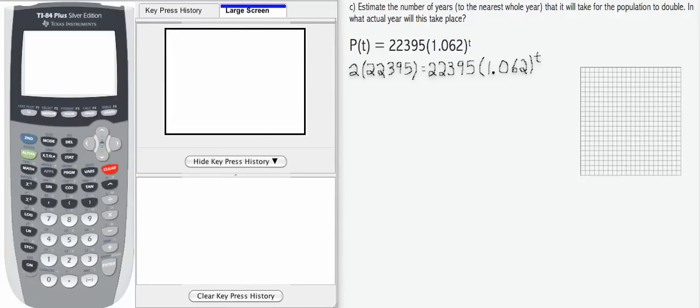In other words, we want to know when our function, on this right hand side here, equals 2 times the initial value. So we can set up the equation that's given here, and then we can simplify our function so that it reads 44,790 equals 22,395 times 1.062 to the t.